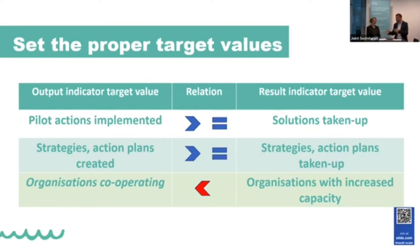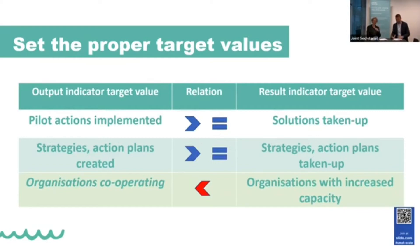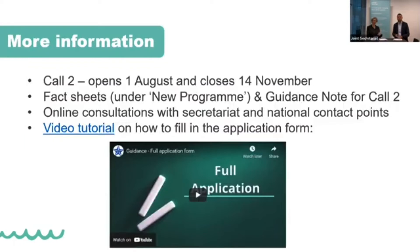A regular project is a different kind of animal — here, realistic target values are especially emphasized. You won't gain higher scores by putting 100 strategies or 50 action plans if it's questionable whether they are achievable within the project's parameters. We recommend looking at our fact sheet on indicators and the intervention logic, which clearly lays out what we mean by pilot action, strategies, and action plans.